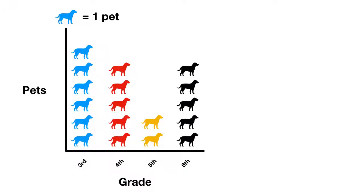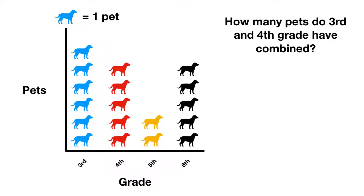Now it's time for you to practice on your own. In this graph, a school counted the number of pets that students at each grade level had. The results are this graph. We want to know, how many pets do the third and fourth grade have combined? Well, to find the combined amount, you'll have to add up third and fourth grade. Third grade has one, two, three, four, five, six pets.